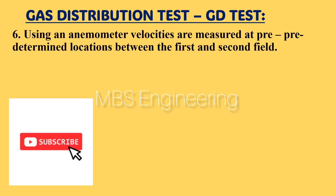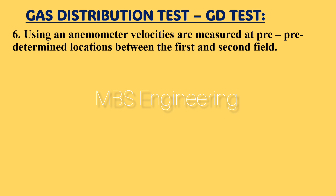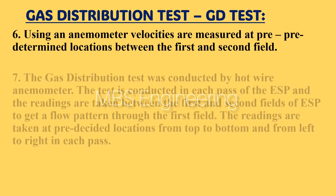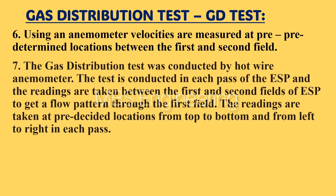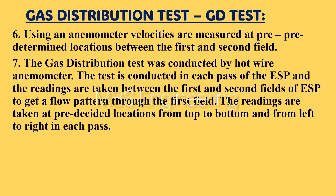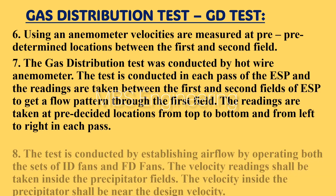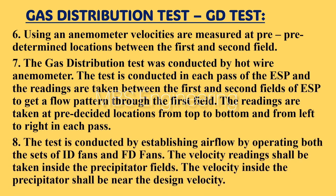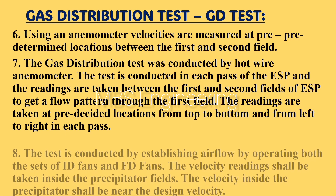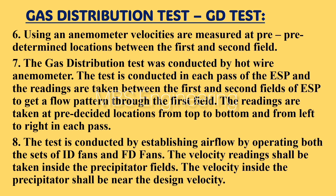Point 6: using an anemometer, velocities are measured at predetermined locations between the first and second field. Point 7: the gas distribution test is conducted by hot wire anemometer in each pass of the ESP; readings are taken between the first and second fields to get a flow pattern through the first field, taken at pre-decided locations from top to bottom and left to right in each pass. Point 8: the test is conducted by operating both sets of ID fans and FD fans; the velocity inside the precipitator shall be near the design velocity.